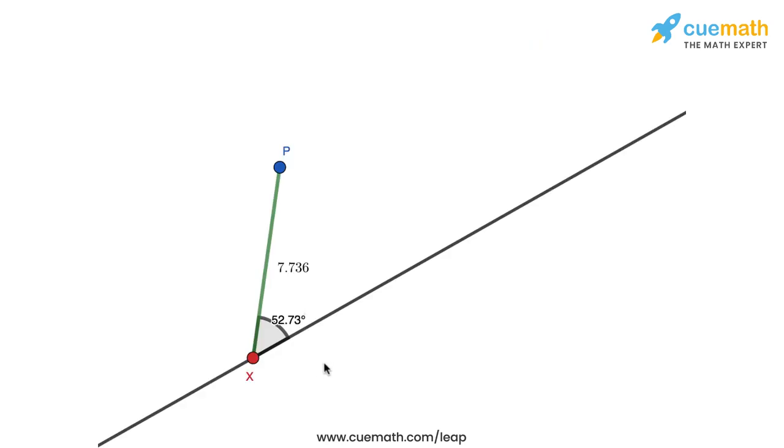So here is a simulation for the given situation. We have this line that you see and we have a point P that is not on the line, and from this point P we have drawn a segment Px onto the line.